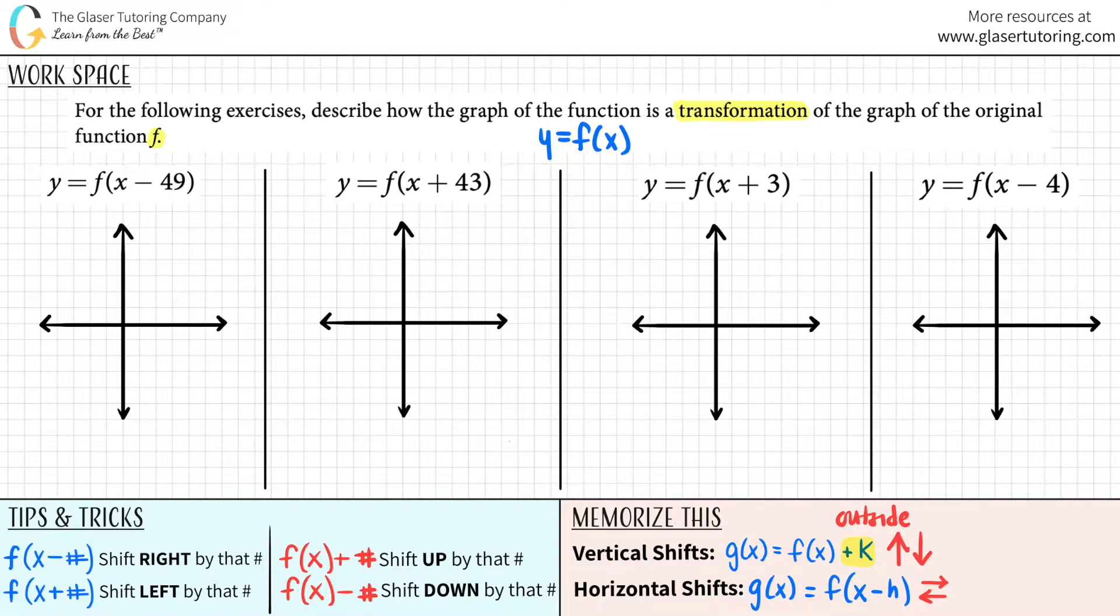Horizontal shifts are always numbers that are added inside the function. You see how it's x minus h, and then inside the parentheses? So that's how you could tell the difference. Horizontal shifts are always inside the function. Vertical shifts are always outside.